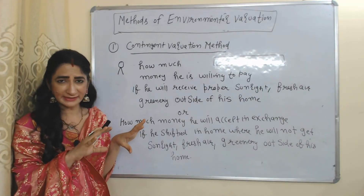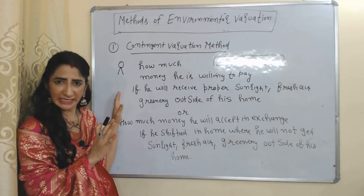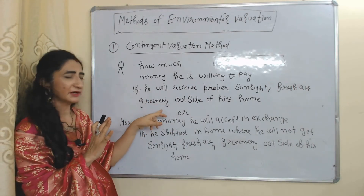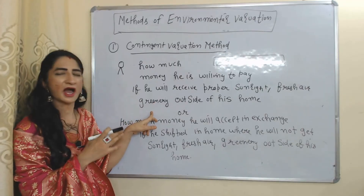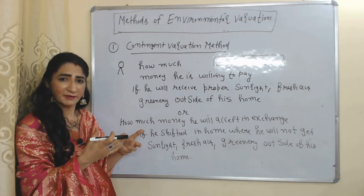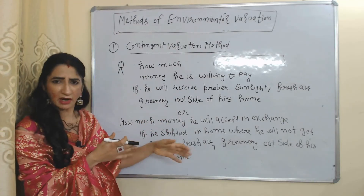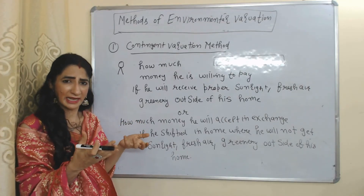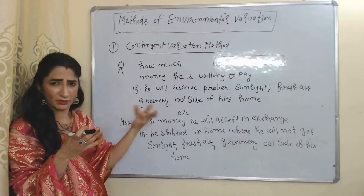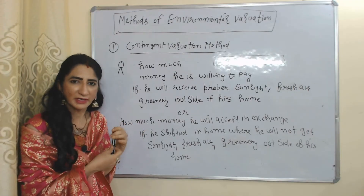With the help of one example, we will understand the Contingent Evaluation Method. Suppose we take an interview of person A and ask him how much money he is willing to pay if he will receive proper sunlight, fresh air, and greenery outside of his home — or how much money he will accept in exchange if he is shifted to a home where he will not get any sunlight, fresh air, or greenery. If he says he will accept 10 lakh rupees, that means the monetary value of environmental goods like sunlight, fresh air, and greenery is equal to 10 lakh rupees.